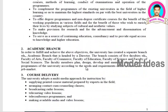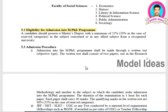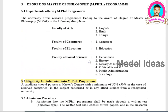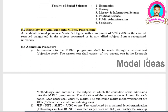Now let me discuss the criteria for MPhil and PhD. The courses for PhD and MPhil are the same. For MPhil, subjects include English, Hindi, Telugu, Commerce, Education, Economics, History, Library and Information Science, Political Science, Public Administration, and Sociology. Those who have completed their post graduation with 55%, or SC/ST with 50%, can apply and write the entrance examination. After the entrance examination, they will be called for interview.